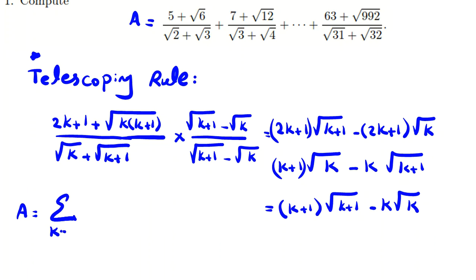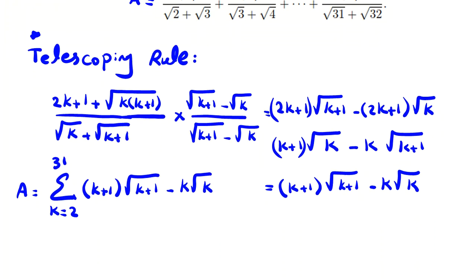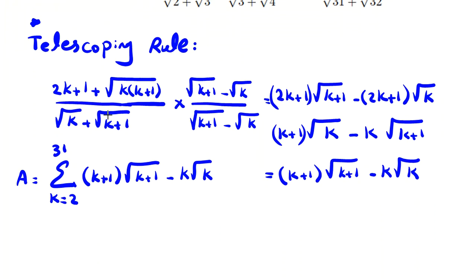So let me write, I can write like sigma k from two to 31, and it will be what? k plus one root k plus one minus k root k. I want to calculate this.